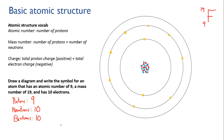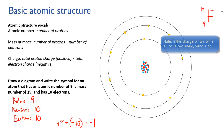We've got 9 protons, so that's plus 9, and we have 10 electrons, so that's minus 10. Our total charge is 9 minus 10, which equals minus 1. So this atom actually has a charge on it, which means we call it an ion. We're going to write the charge at the top right.